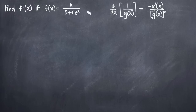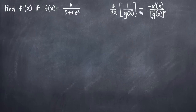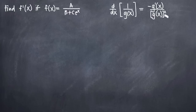To solve this particular problem, we're going to need to use the reciprocal rule formula, which I've written over here. The reciprocal rule formula tells us that when we want to take the derivative of a quotient, or a fraction, where we have 1 in the numerator and any function — we'll call it g of x — in the denominator, the derivative of 1 over g of x is negative g prime of x divided by g of x squared. This is the reciprocal rule formula.